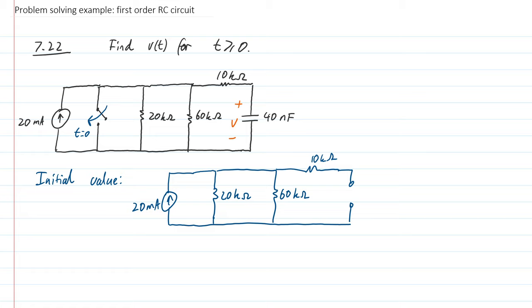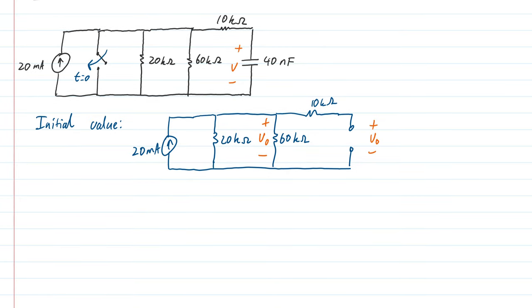The thing we're trying to find is the voltage V0 here across this capacitor. But because there is no current flowing in this resistor, there is no voltage drop across that resistor. Therefore the voltage here is actually the same. So this question boils down to finding that voltage across this part of the circuit.